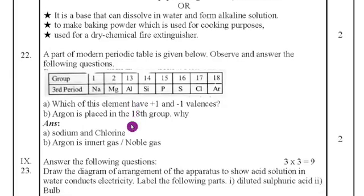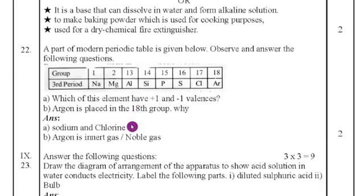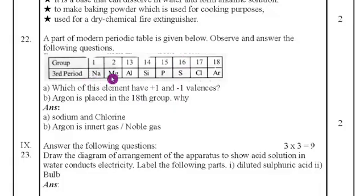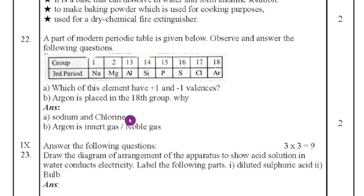Twenty-second question: a part of the modern periodic table is given. We have to identify which elements have +1 and -1 valency. Sodium has +1 valency because it donates one electron, becoming electropositive. Chlorine receives one electron, becoming negative. So the answers are sodium (+1) and chlorine (-1). Additionally, argon is placed in the 18th group because it is an inert gas — a noble gas or zero group element.